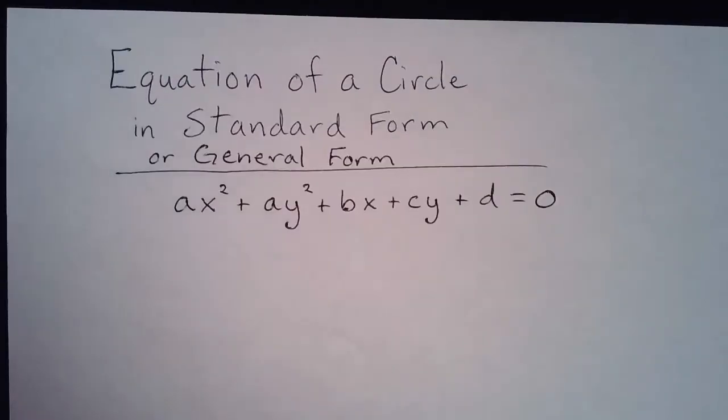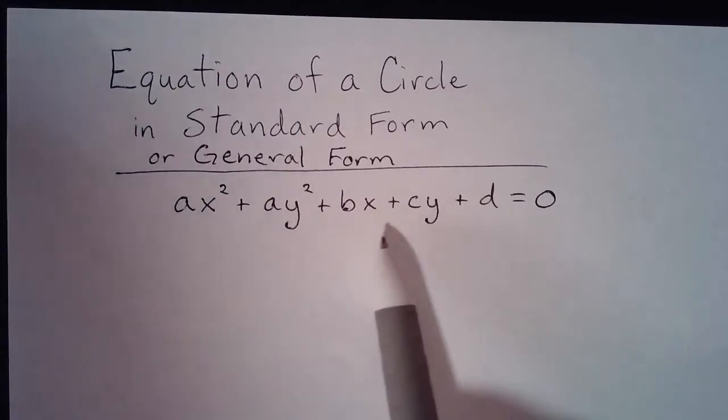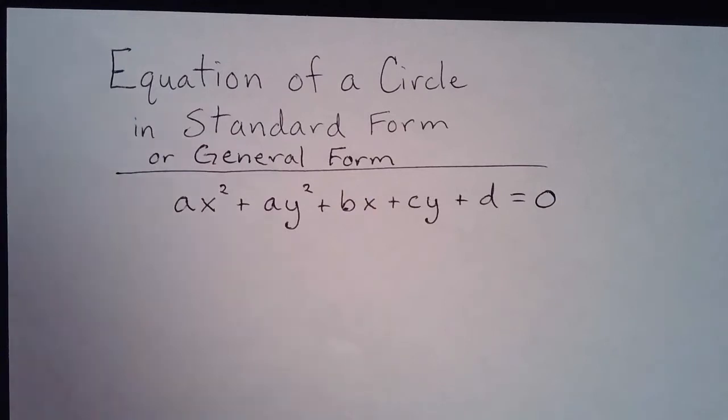Alright, so now we're looking at the equation of the circle in standard form or in general form, where we have ax squared plus ay squared plus bx plus cy plus d equals zero. And now this is a lot longer, but it's the same thing just written in a different form.